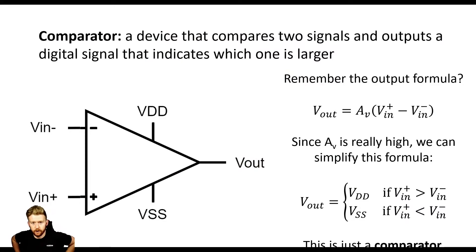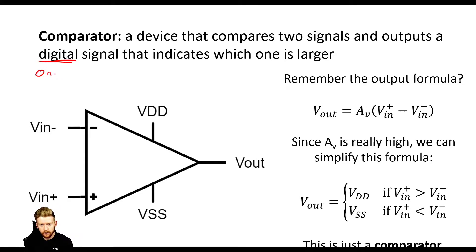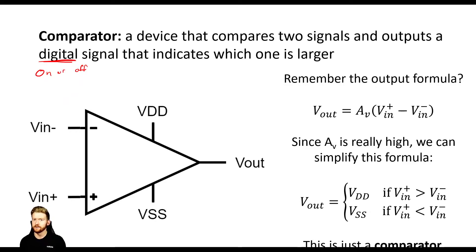At the very top you can see the definition for a comparator. A comparator is a device that compares two signals and outputs a digital signal that indicates which one is larger or greater. A digital signal tells us that this thing is either going to be on or off — it can't be somewhere in between. That would be an analog signal. So for a digital signal, it's either going to be on or off. You might also hear zero or one.